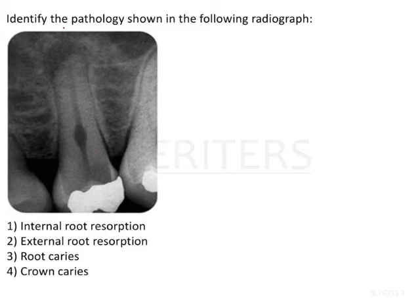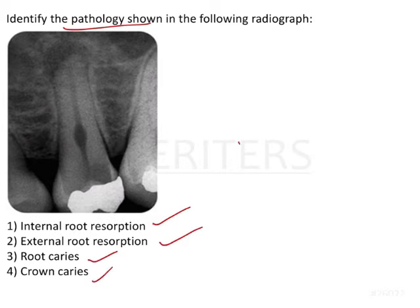This question is an IBQ asking about the pathology visible in this radiograph. Identify that pathology — options are internal root resorption, external resorption, root caries, and crown caries.